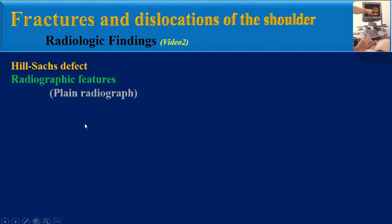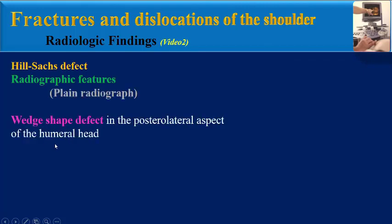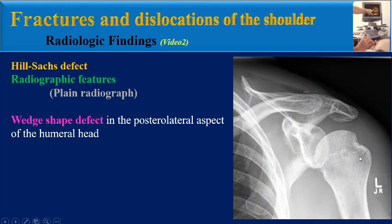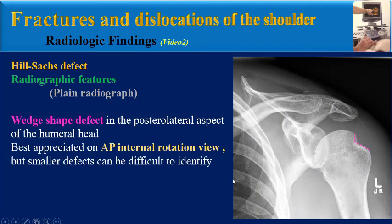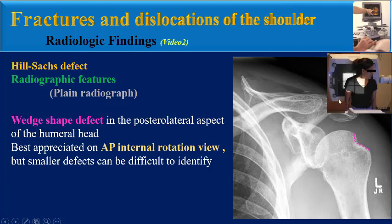What are the radiographic features of a Heel Socks defect? The features on plain radiograph include a wedge-shaped defect in the posterolateral aspect of the humeral head, which is appreciated on AP internal rotation view, but smaller defects can be difficult to identify on plain radiography.